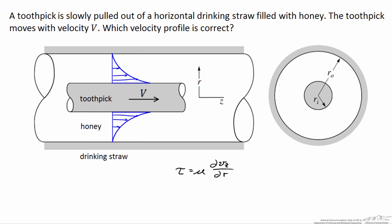To draw a velocity profile, I always think it's easiest to draw my axes. I'll put vz on the vertical axis and r on the horizontal axis. At the outer wall of the toothpick, the velocity vz is some large positive value — this is at r equal to ri. And at r equal to ro, the inner wall of the drinking straw, the velocity vz must equal zero at that location.